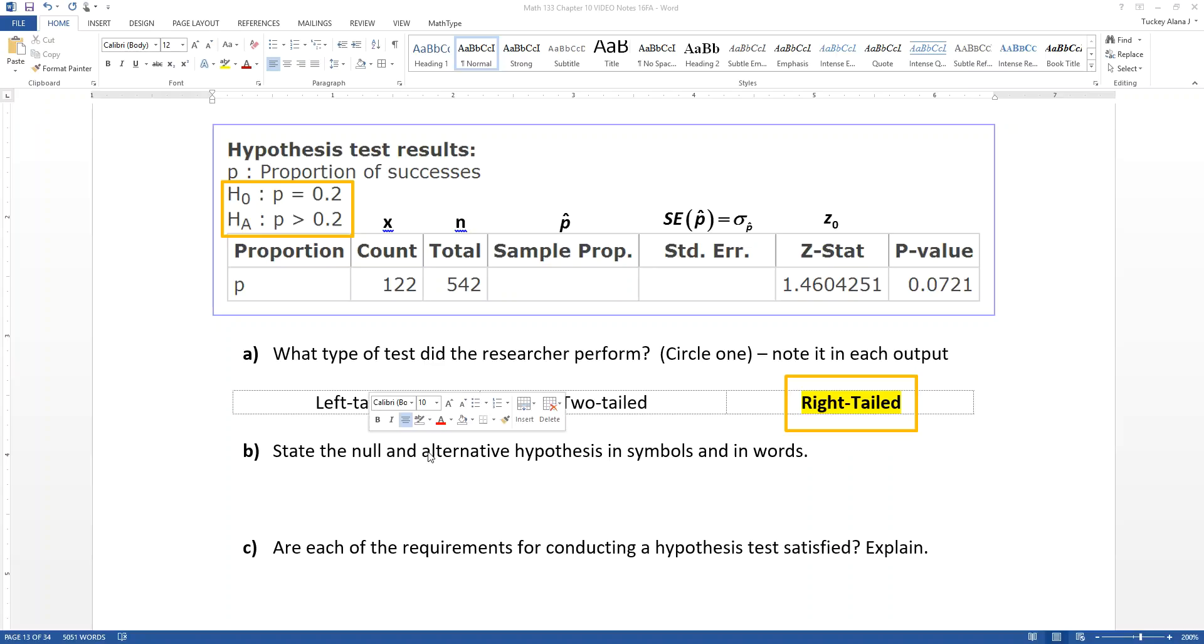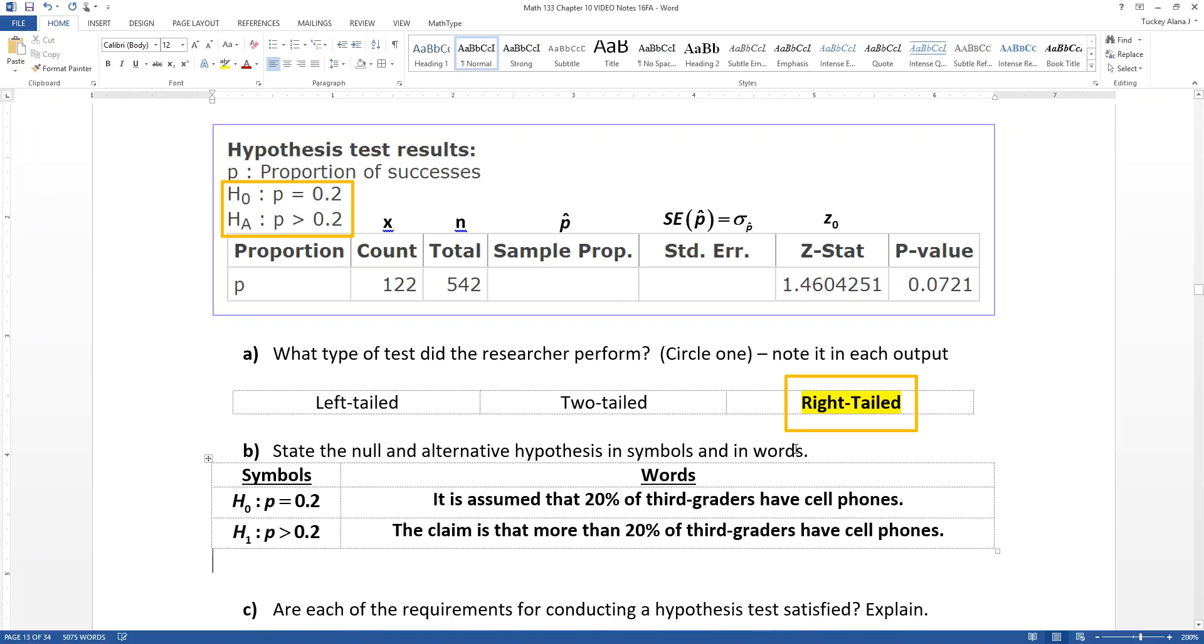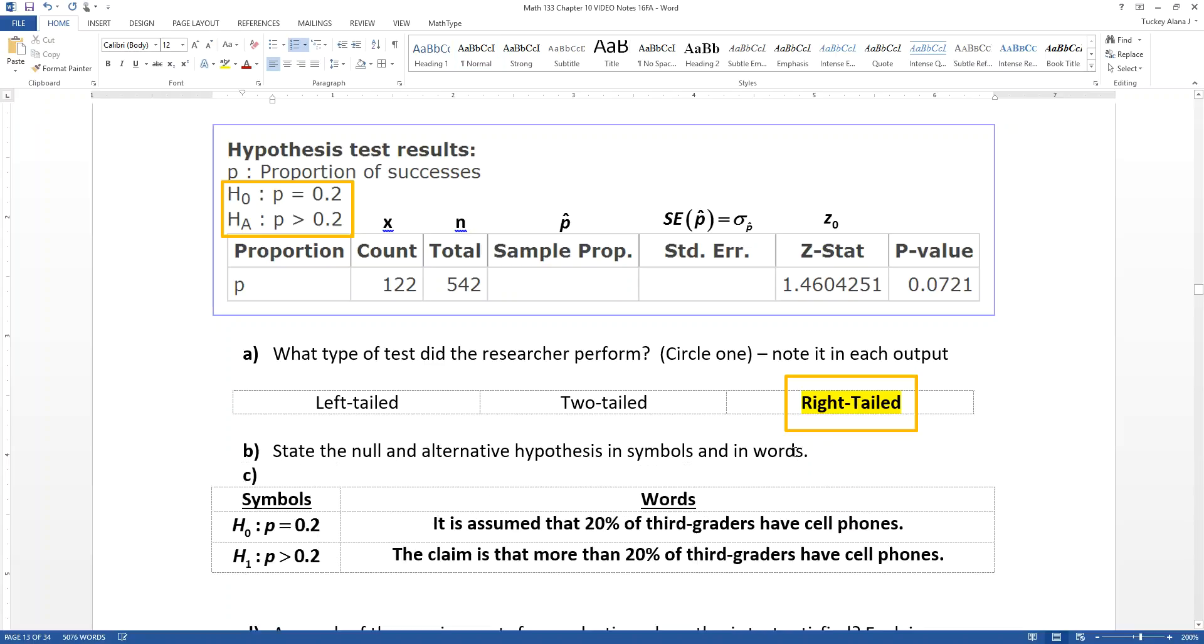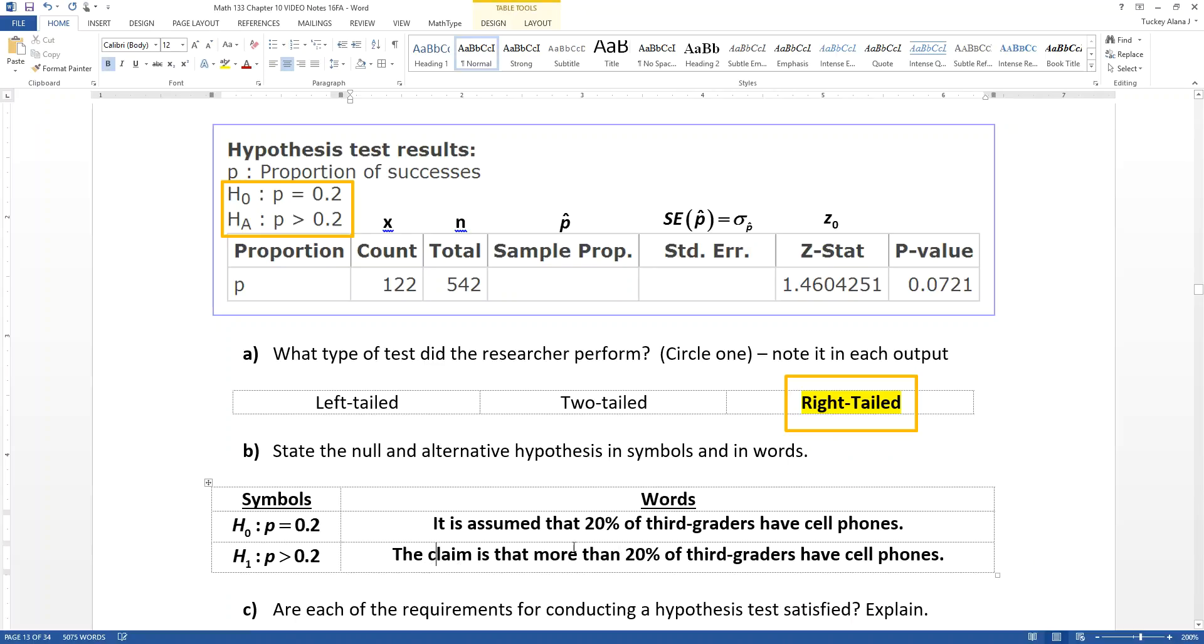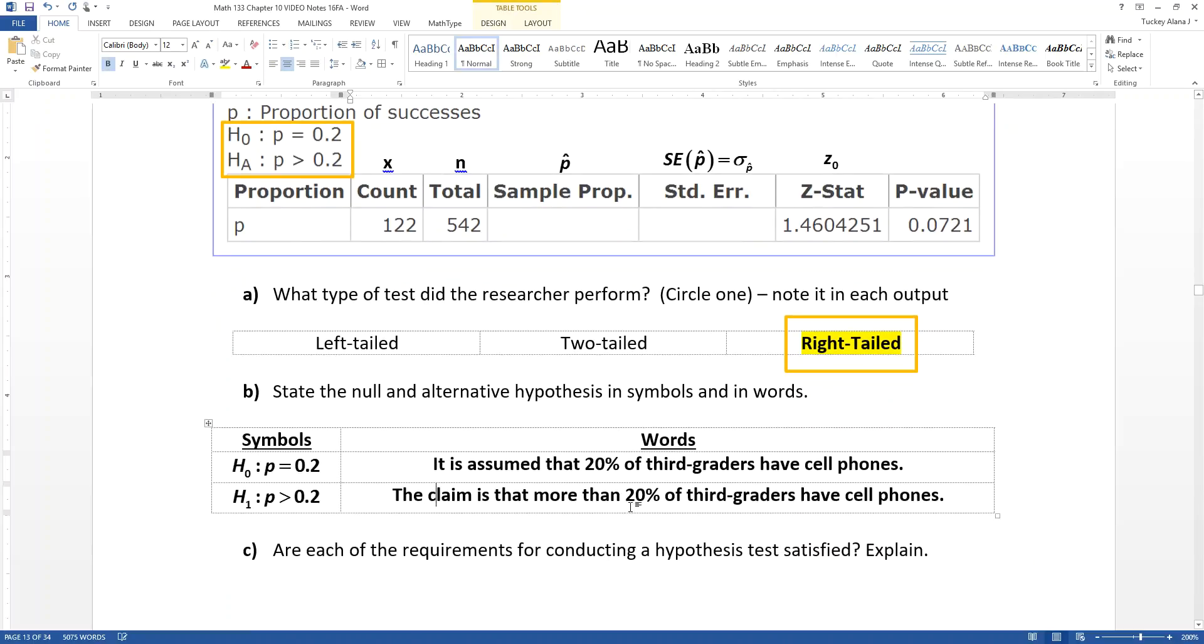So you can tell this is a right tailed test because it has a greater than symbol in the alternative hypothesis. Now the null and alternative would be that P equals 0.2 and P is greater than 0.2. Those are the symbols, but the words are explaining it in context. So we would assume that 20% of third graders have cell phones unless we can prove that it is more than that, which is our claim. So the claim is that more than 20% of third graders have cell phones.